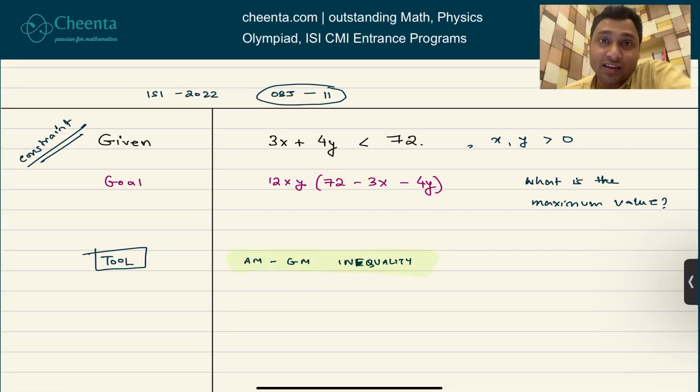Hello everyone, this is Aushwini Dash Gupta from Chinda. Today we will work on a very exciting problem related to the AM-GM inequality. It's an application of that from ISI B-STAT B-Math entrance 2022 objective problem number 11.